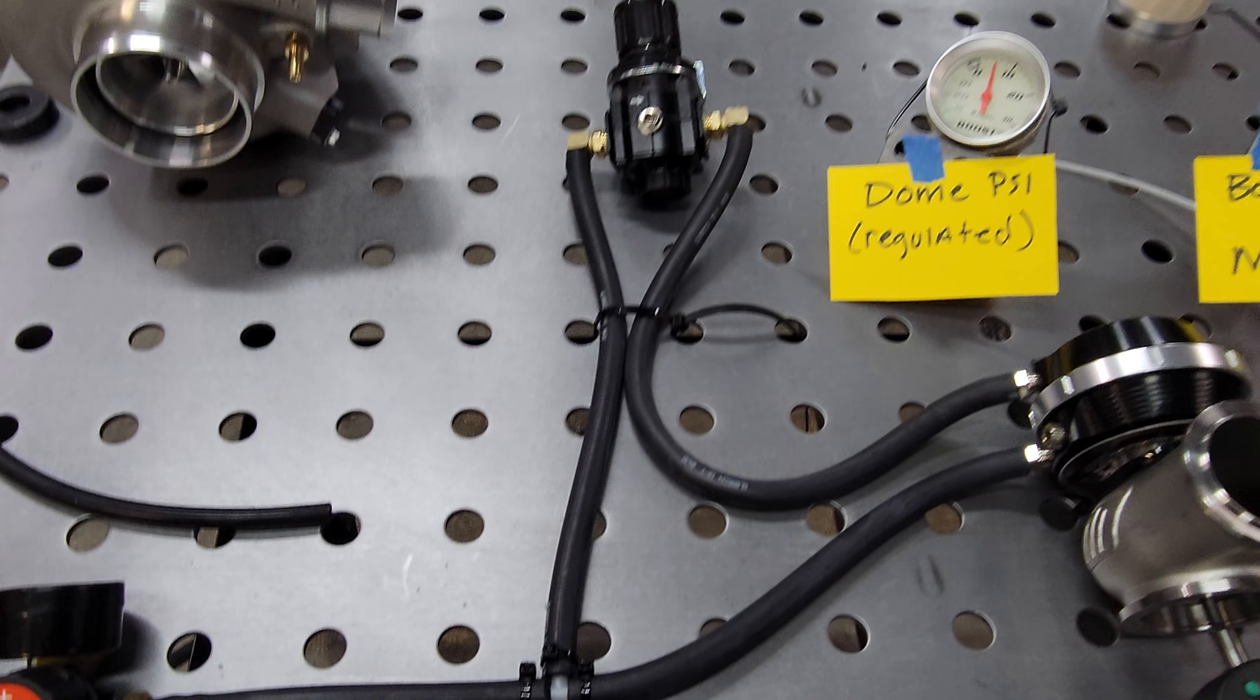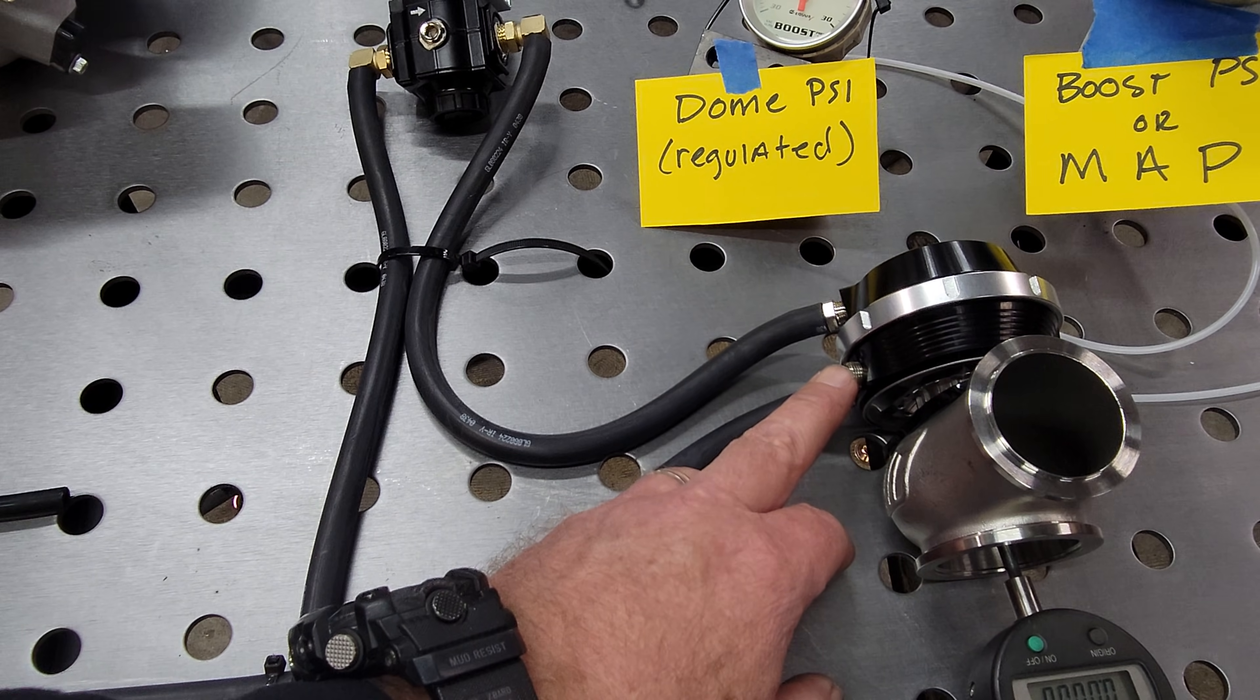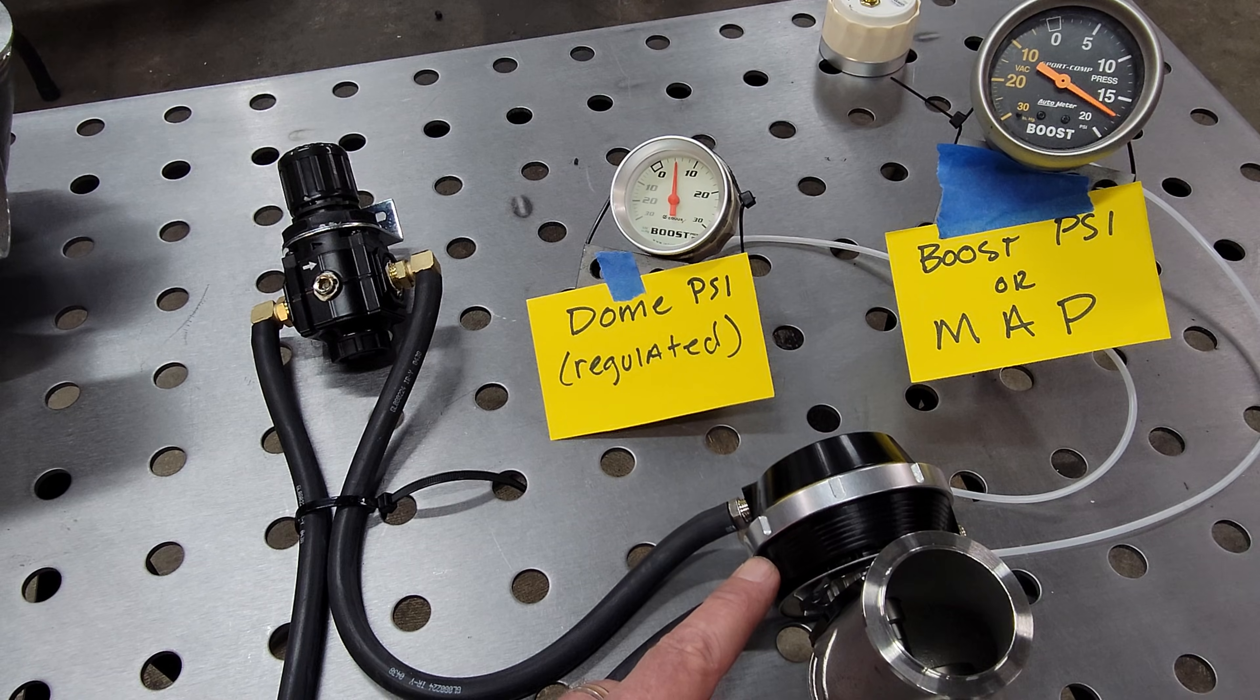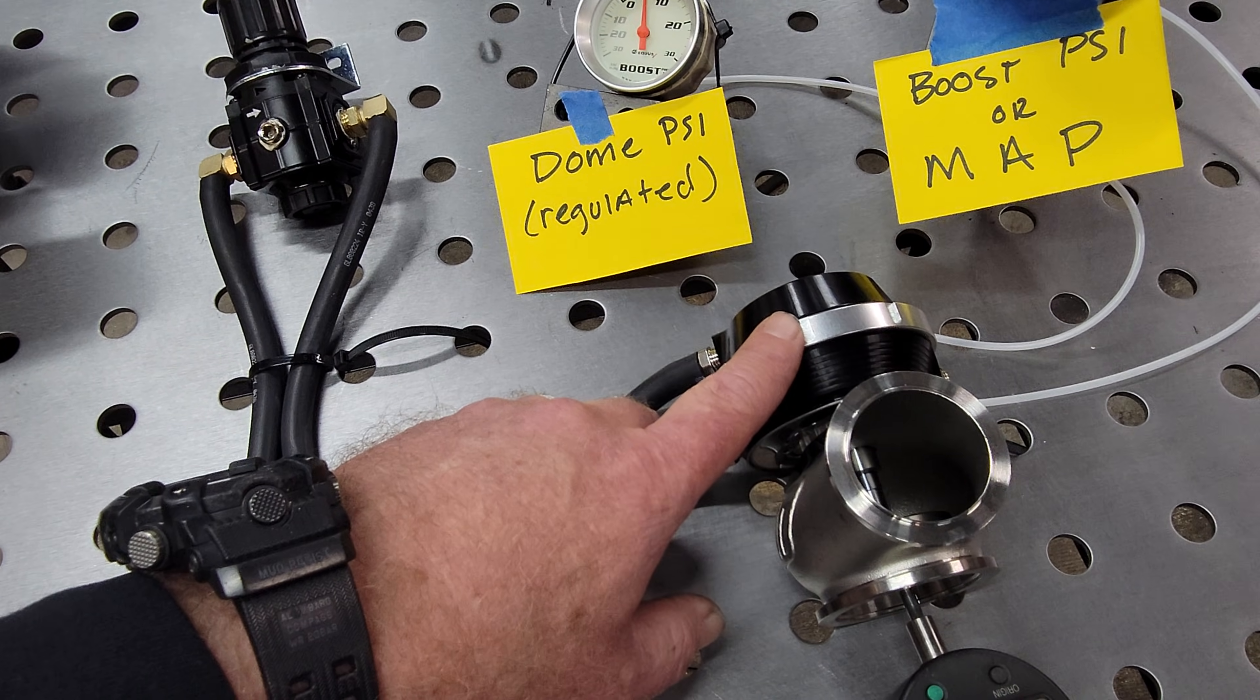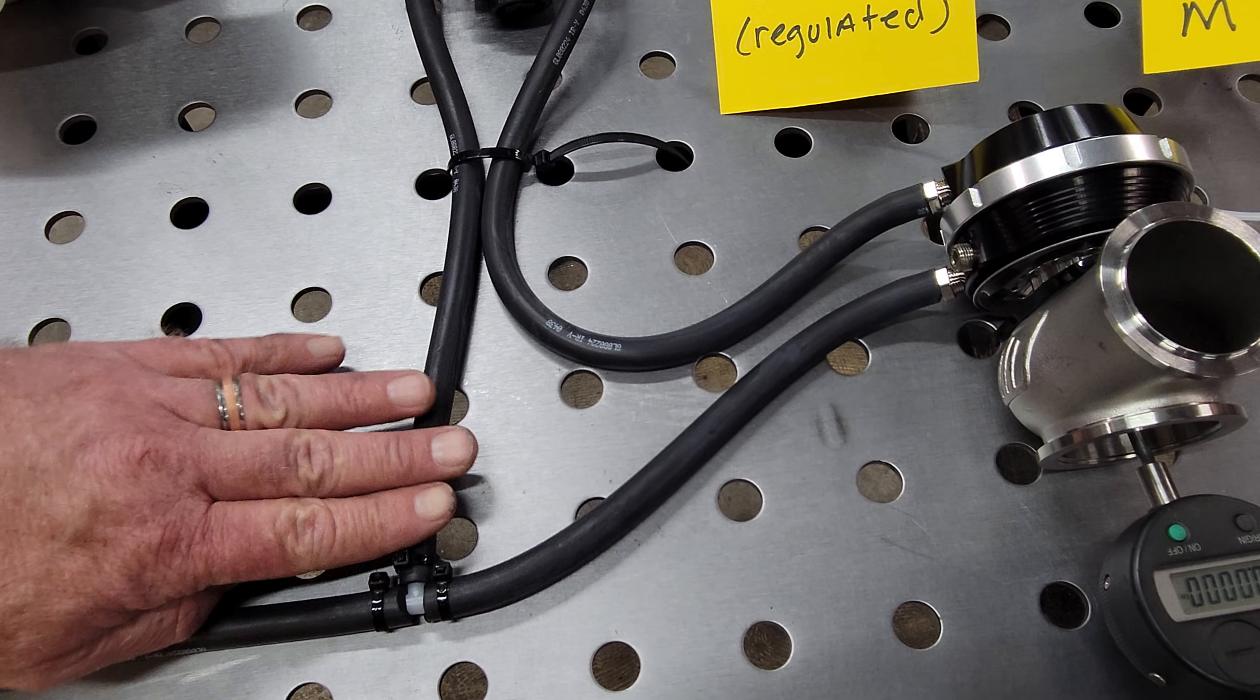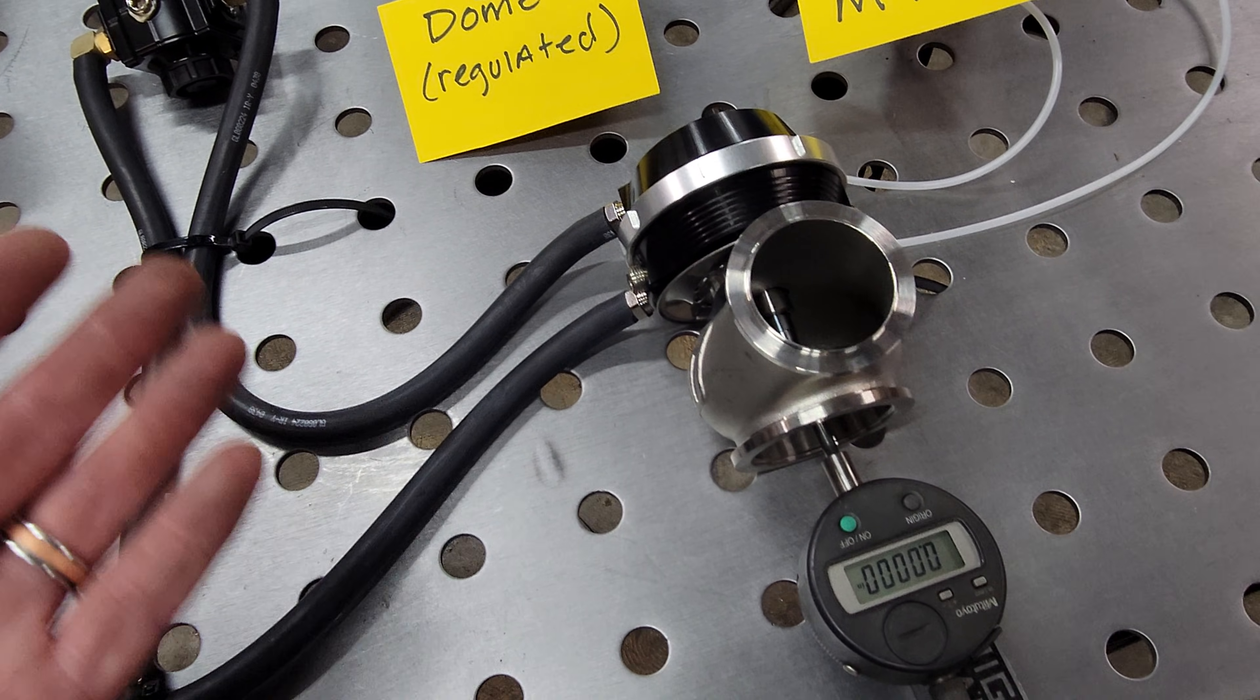So to recap, pressure coming in, bottom of the dome like normal, bottom of the actuator as normal. Your base spring pressure inside is 7 psi for this particular one, whatever yours is. So if we did not have any of this here, we just had this straight hooked up, the actuator would start to open at that 7 pounds.